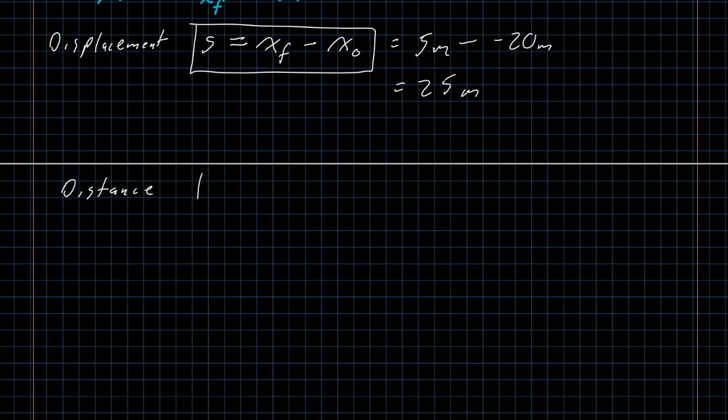The distance traveled is literally just the absolute value of displacement. We don't give it a different variable. Distance is the absolute value of displacement. And, well, in this case, our displacement was positive. So, our distance is also 25 meters.